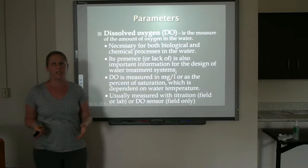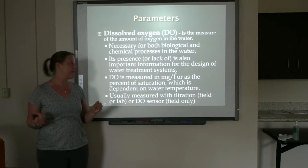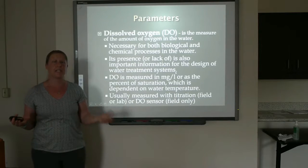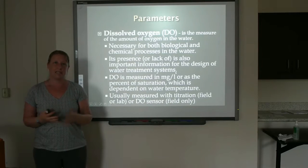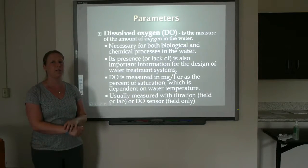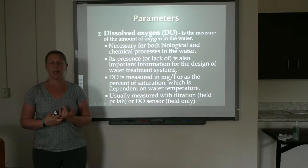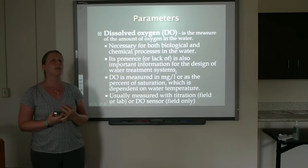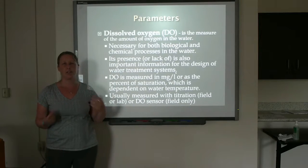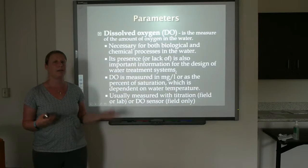Dissolved oxygen is measured either in units of milligrams per liter or as a percentage saturation, which is temperature dependent — specifically, the percentage of how much oxygen could be dissolved in the water at that temperature. This is measured in the field either using titration, which is not done very commonly, or with a field probe, which is a much more common method. Generally you want to measure this in the field because it's going to change pretty quickly, but there are some cases where you would do a lab titration.